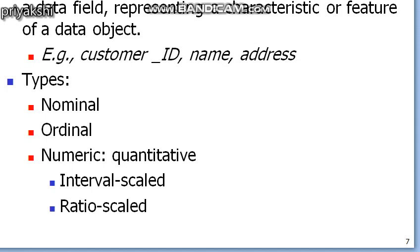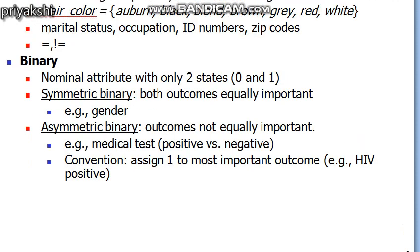There are generally three types of attributes in a data object: nominal attributes, ordinal attributes, and interval-scale or ratio-scale attributes. Nominal and ordinal attributes are known as categorical or qualitative attributes, while interval and ratio scale attributes are known as quantitative or numeric attributes. Before applying any data mining algorithm or preprocessing technique, you should know what attribute types your data object contains.